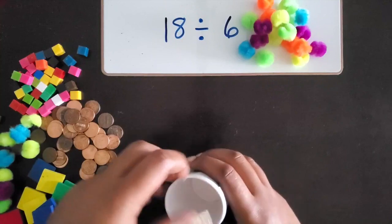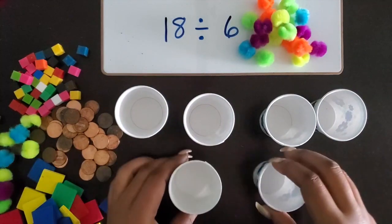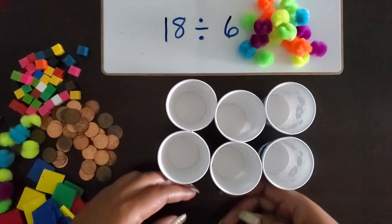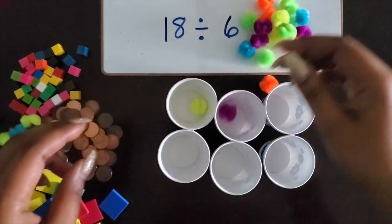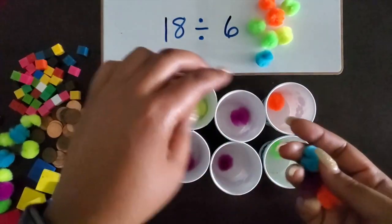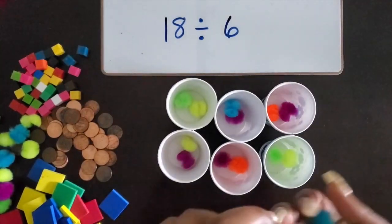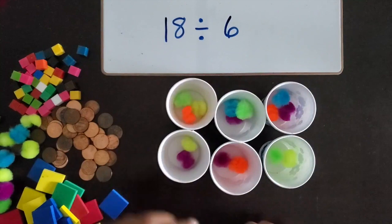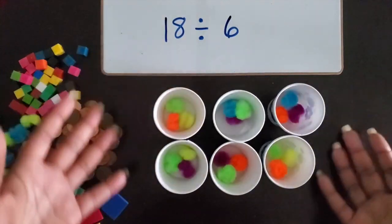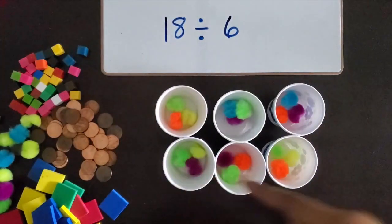I'm going to take my cups — six of them to represent six groups. Then I'm going to take these pom-poms and share them equally among the six groups. Each cup gets one pom-pom. I still have more, so each cup gets two pom-poms. I have more, so let's see if there's enough for each cup to get three pom-poms. You want to specify with students that there should be an equal amount in each group. So we took 18 pom-poms and divided them equally into six groups.